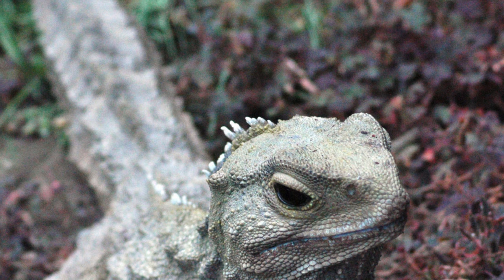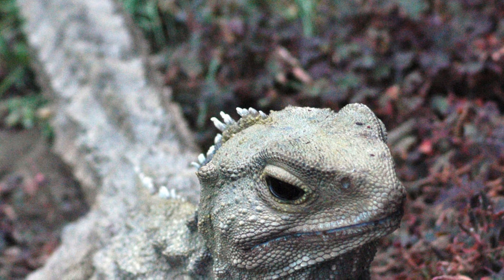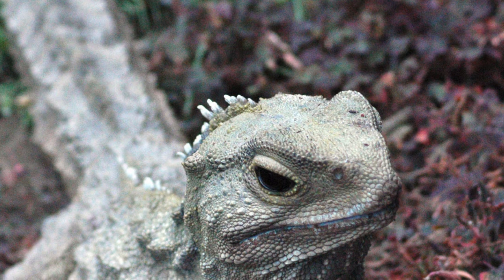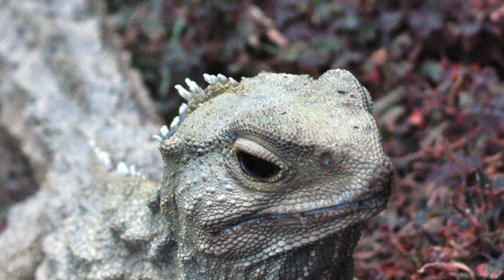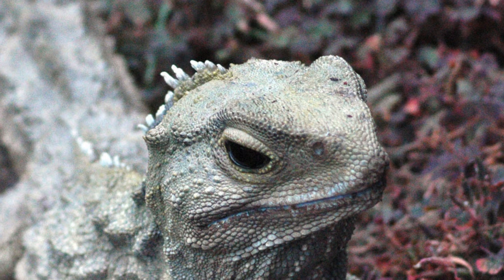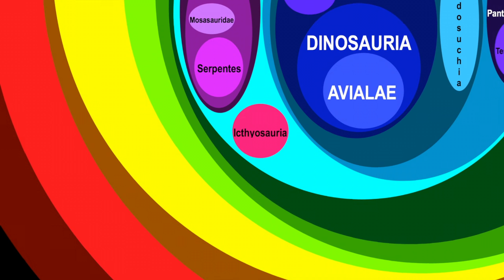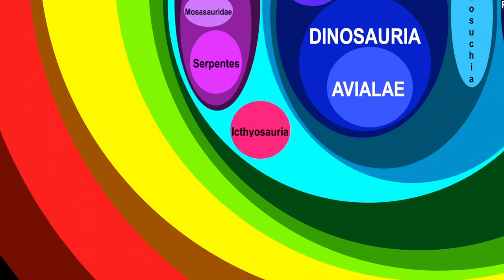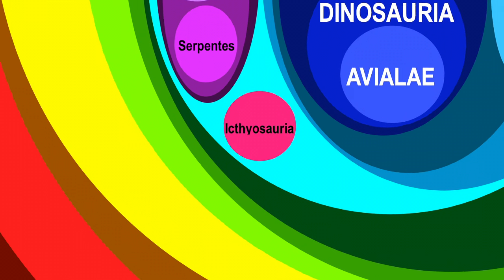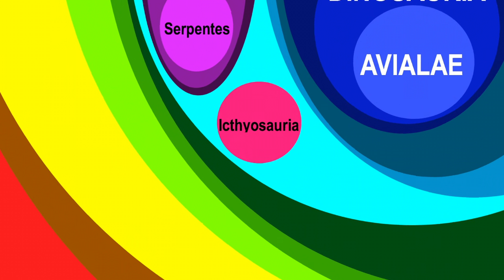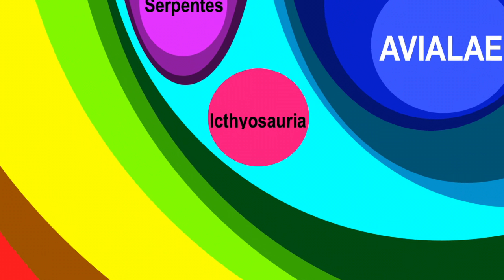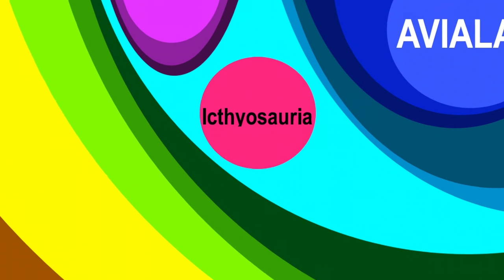This group also includes the Tuatara, a strange reptile found only in New Zealand that isn't a lizard, snake, or mosasaur — and still isn't a dinosaur because it's in Lepidosauria. Another fan favorite group of Mesozoic reptiles that aren't in fact dinosaurs? Ichthyosaurs — the dolphin-like marine reptiles. They're in Ichthyosauria, yet another group decidedly outside of Dinosauria, and in fact outside of both Archosauromorphs and Lepidosauria, making them not really closely related to dinosaurs or to lizards.